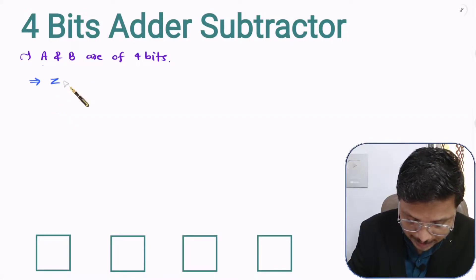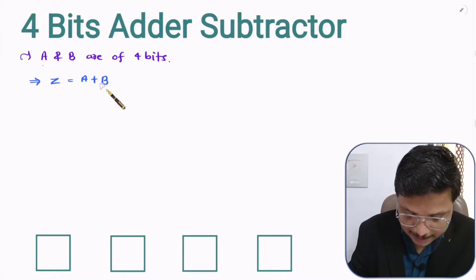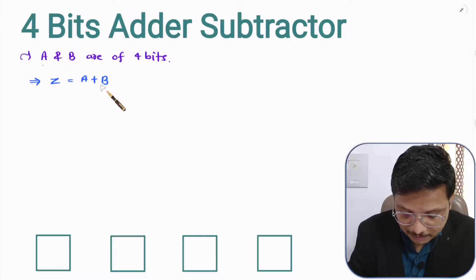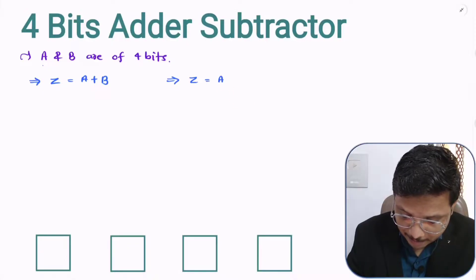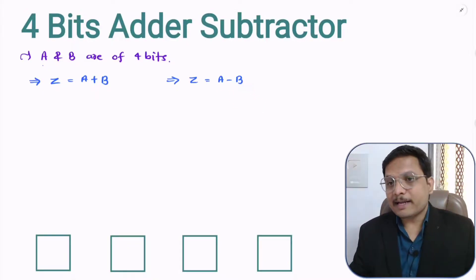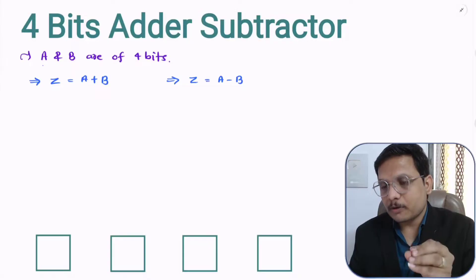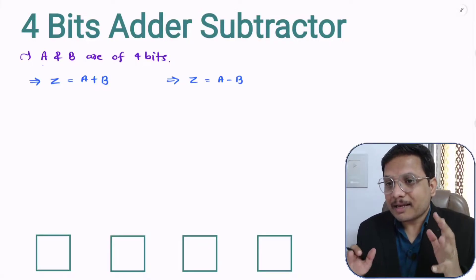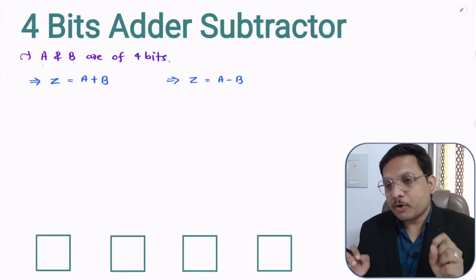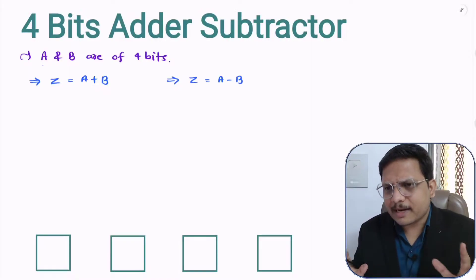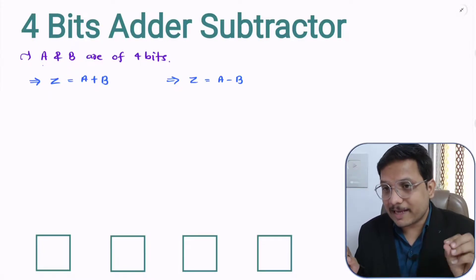Let us say you want to add this — so Z equals A plus B, that is the addition we will be doing. And let us say you want to subtract — so Z will be A minus B. Now one thing that you should know is that the computer cannot do subtraction directly. Addition circuit is possible with computer but subtraction circuit is not possible directly.